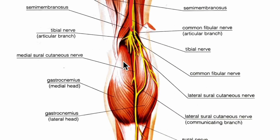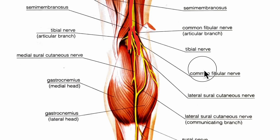Here you can see more clearly that it divides into the tibial nerve and the common peroneal nerve, also called the common fibular nerve.